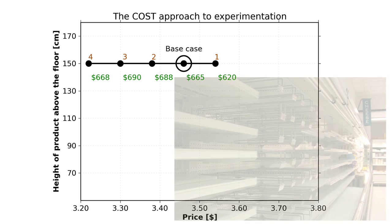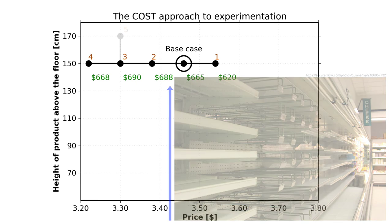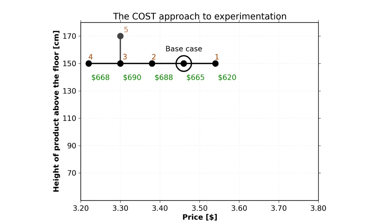Now let's vary the shelf position. This is a continuous variable, but we have discrete levels for it: 40, 45, 50, 55, 60, up to a maximum of 200 centimetres. We try raising the product from 150 to 170 centimetres — the average height of a male person — since this product is for male customers. But unfortunately the profit seems to have dropped off; we're down to $675.